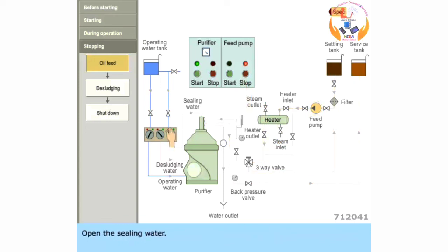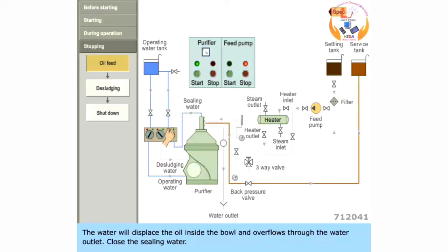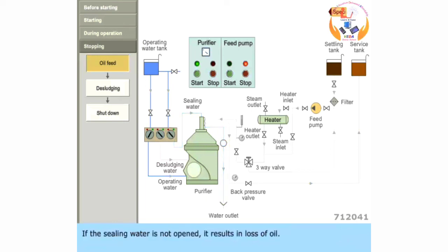Open the sealing water. The water will displace the oil inside the bowl and overflow through the water outlet. Close the sealing water. If the sealing water is not opened, it results in loss of oil.